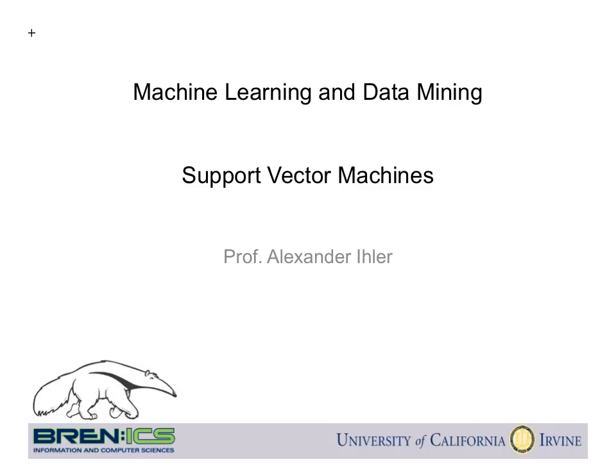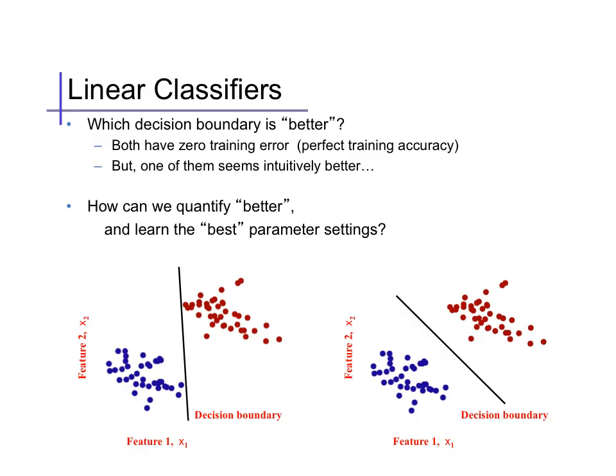One of the most popular types of linear classifier is the support vector machine. Suppose we're training a linear classifier for a set of data. There may be a number of classifiers that all separate the data, in other words have no training error. How can we choose among these?